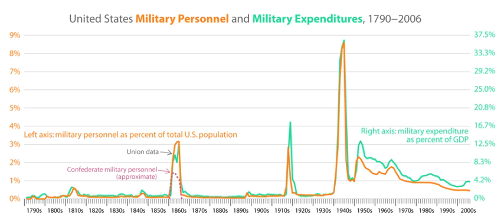Meanwhile, the United States continued to provide supplies and money to Britain and France, and initiated the first peacetime draft. Industrial mobilization took longer than expected, so divisions were sent to Europe without equipment, relying instead on the British and French to supply them. By summer 1918, a million American soldiers, or doughboys as they were often called, of the American Expeditionary Force were in Europe, serving on the Western Front under the command of General John Pershing, with 25,000 more arriving every week.